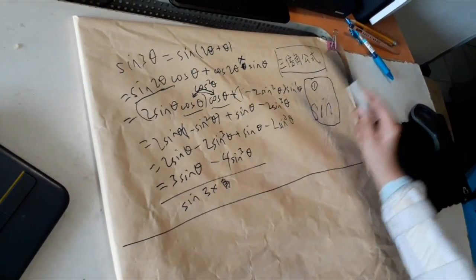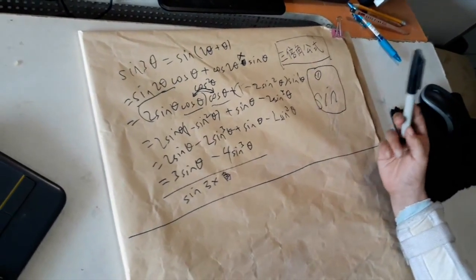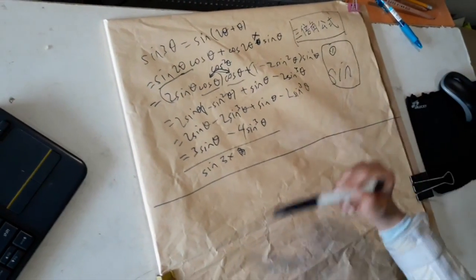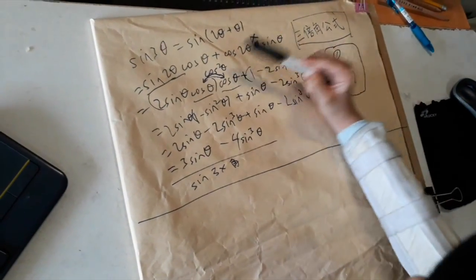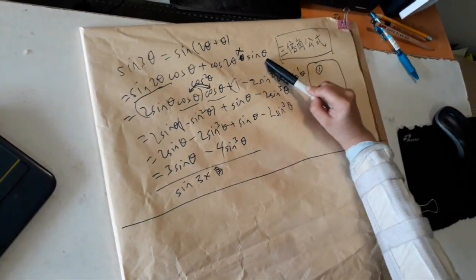Now we can expand it like this. The formula we're using is sine cosine, cosine sine. Remember that from the previous episode. So we have to write sine 2 theta times cosine theta, plus cosine 2 theta times sine theta.